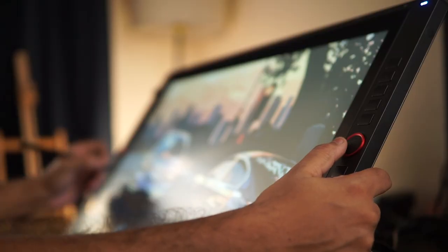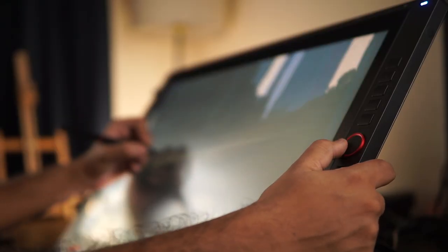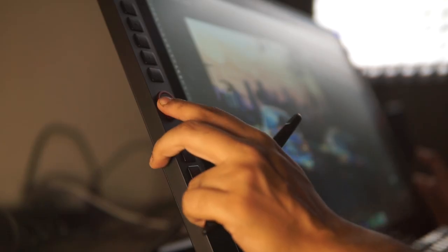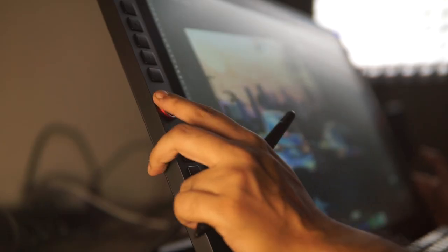This tablet also houses the dial wheels on either side of the display, and you can toggle them between scroll, rotate, brush size, and zoom. You can also distribute these actions among the two dial wheels, and you can also disable them if you want. Like I switch between the brush and the zoom on the right-hand side of the scroll wheel, while I use the left one for rotation, canvas rotation.